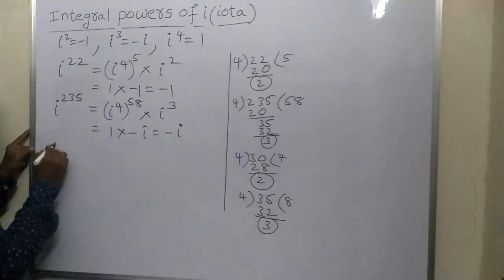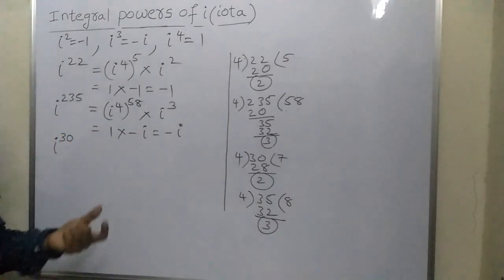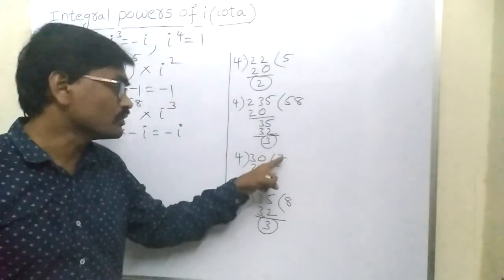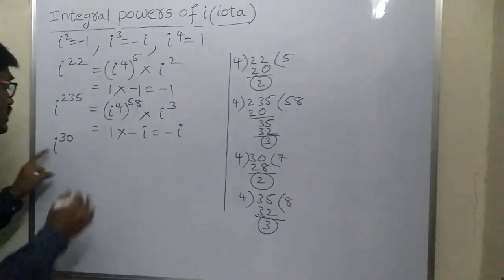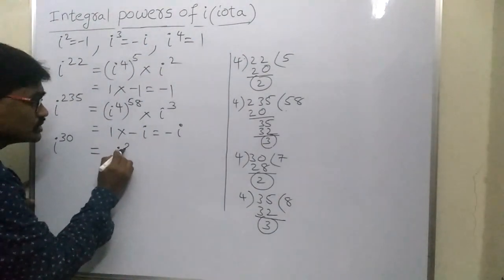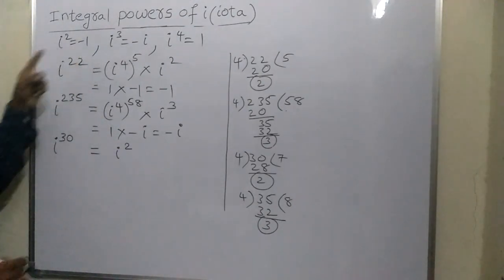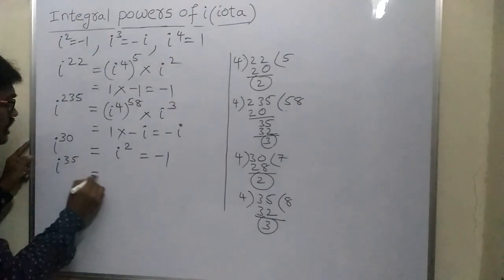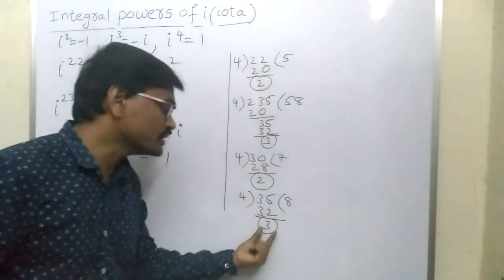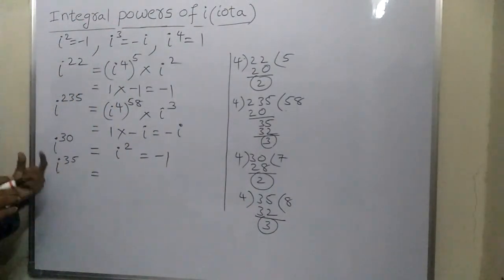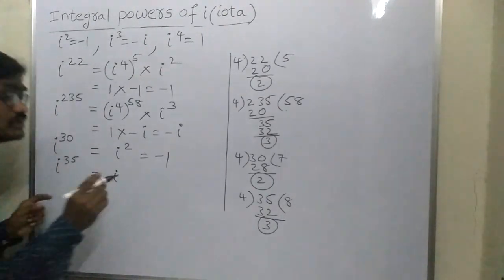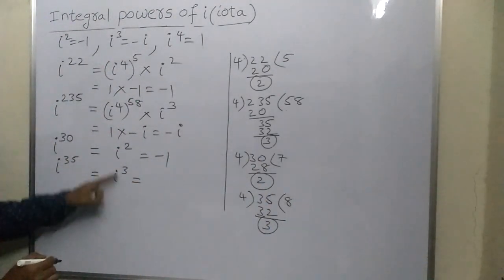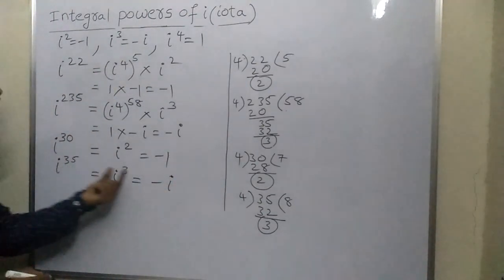Let us see one more example: i³⁰. Write down i³⁰ directly as i raised to the remainder on dividing 30 by 4. The remainder is 2. Therefore i³⁰ is written as i², and i² = minus 1. Last one: i³⁵. On dividing 35 by 4, the remainder is 3. Therefore, directly write i³⁵ as i³, and i³ value is minus i. Therefore i³⁵ = minus i.